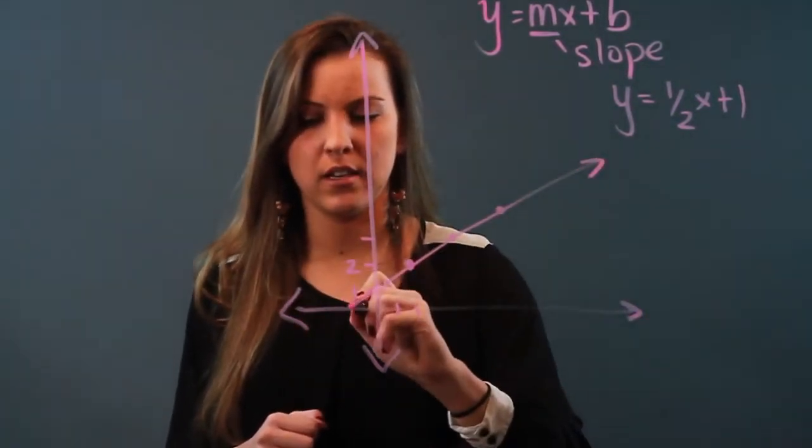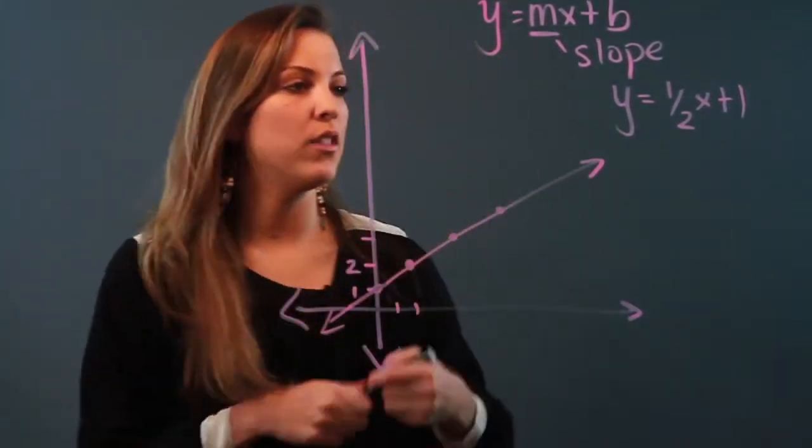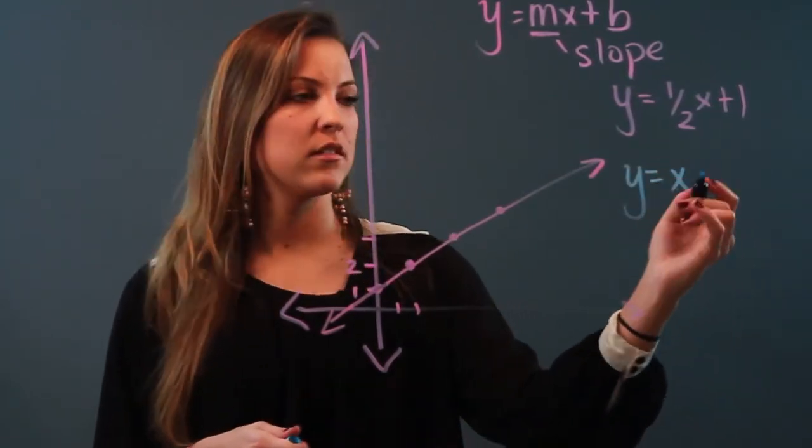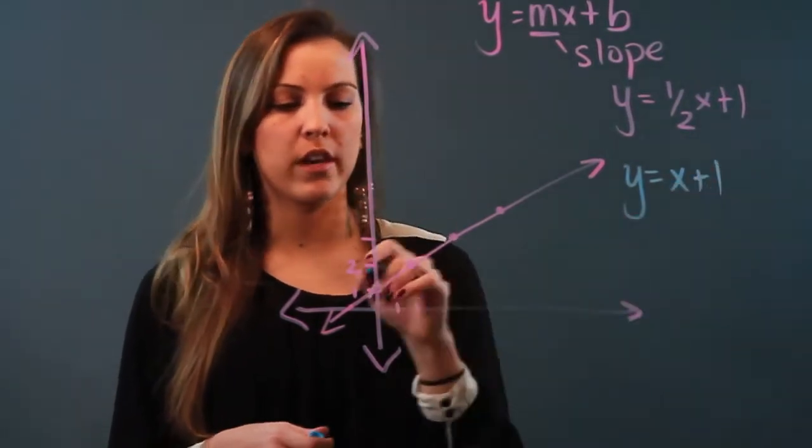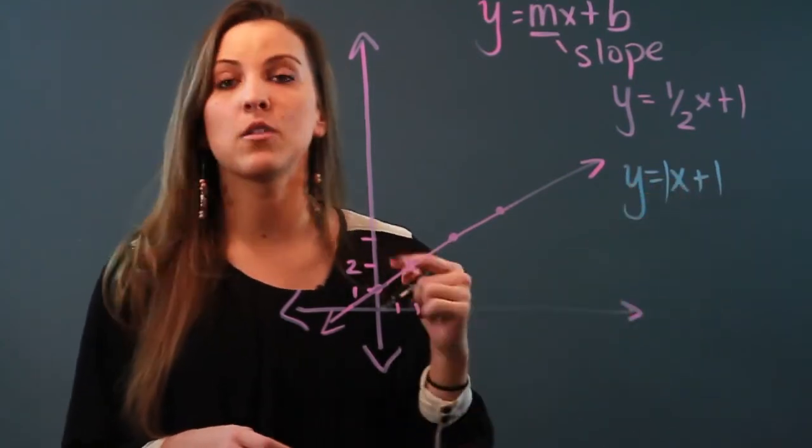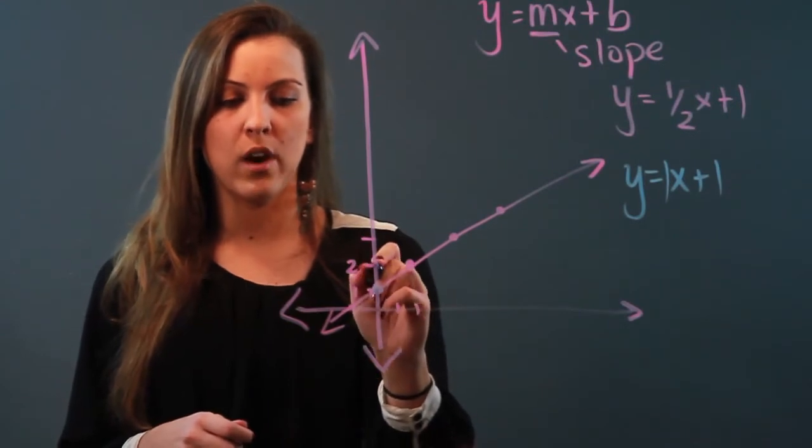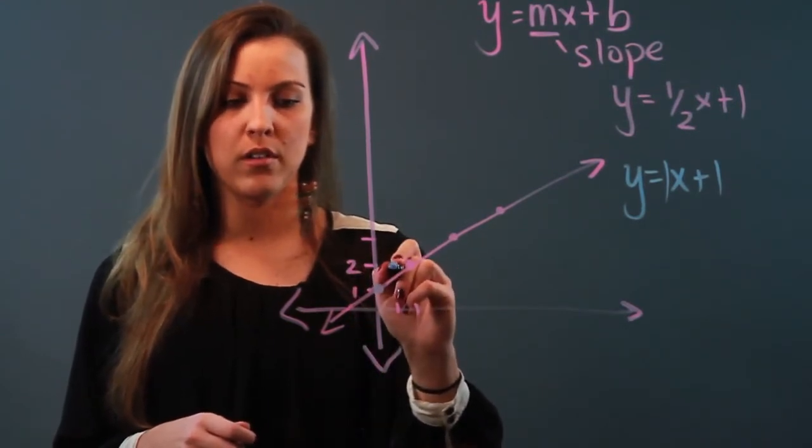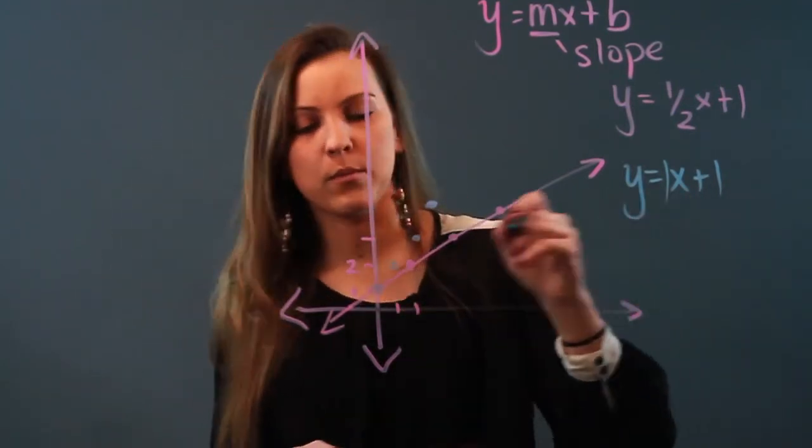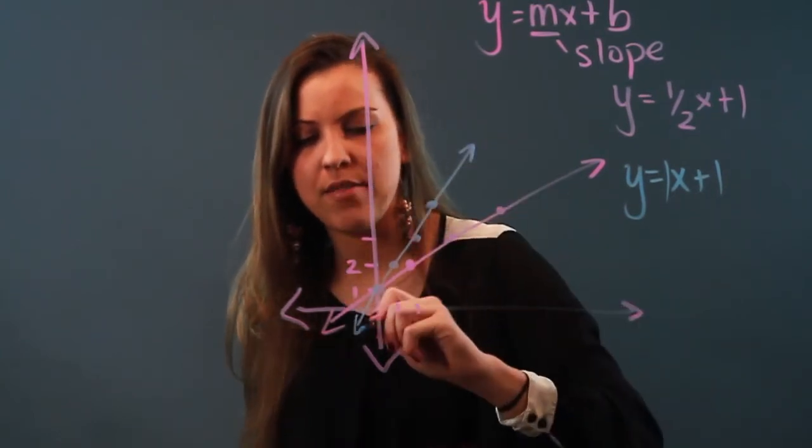This pink line is the equation y equals one-half x plus one. Now let's say I give you the equation y equals x plus one, crossing at the same y-intercept. The invisible coefficient of x is really one, so my slope is one this time. From this same y-intercept, I'm going to go one up and one over, one up and one over. So my blue line y equals x plus one is going to look something along the lines of that.